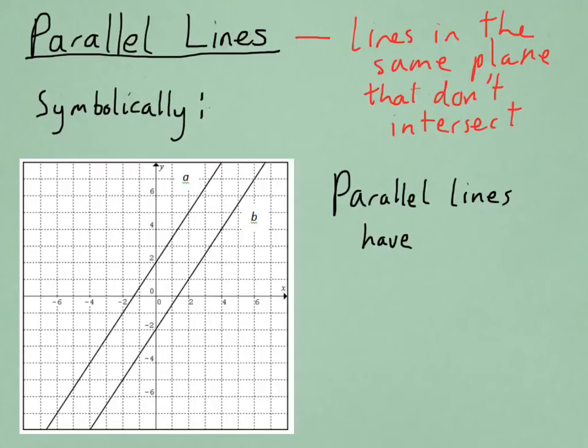Symbolically, we could write this as A is parallel to B. These two vertical lines, which are parallel, indicate that those two lines, A and B, are parallel. And we would read it as A is parallel to B.